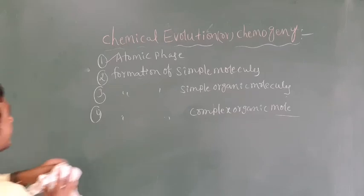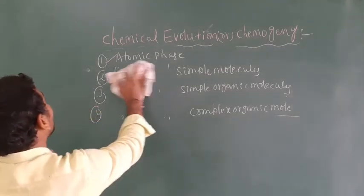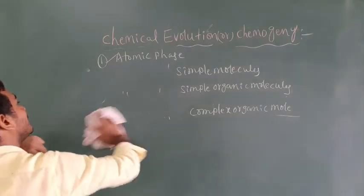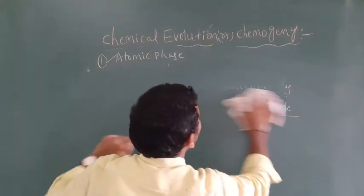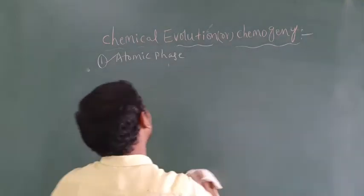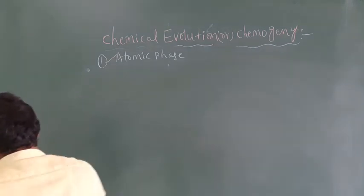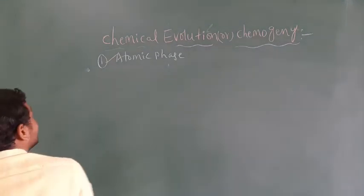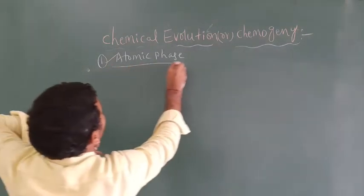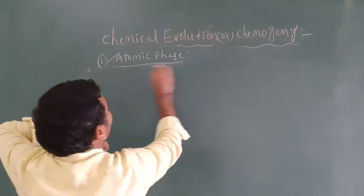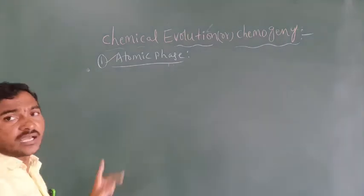So like this, the four steps are there in the chemical evolution. The formation and origin of life is taught through the chemical process, and it ends with the biological process.